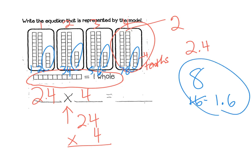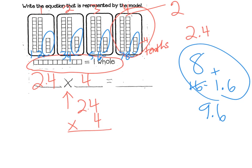Instead of calling it 16 tenths, I'll call it one and six tenths — one extra whole and six extra tenths. Now combining: I have eight wholes and an extra one and six tenths, so the total is nine and six tenths. I'm going to switch back to red and go to my algorithm. Algorithms are really important — I always tell my students the algorithm is kind of like your fallback. If these models get a little tricky, you can always fall back on your algorithm to get the answer and double-check.